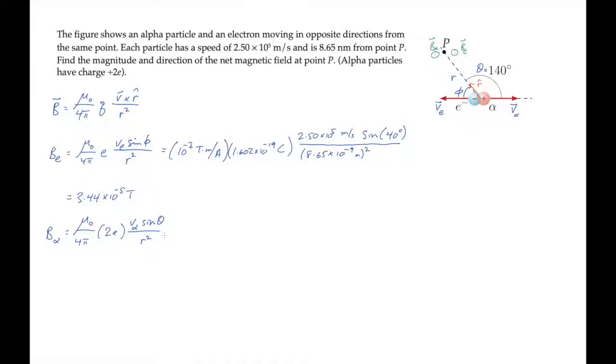Because sine of theta equals sine of phi, and the alpha particle has the same speed as the electron, we can see that the field produced by the alpha particle has twice the magnitude of the electron's field. So that is 6.88 times 10 to the minus fifth tesla.